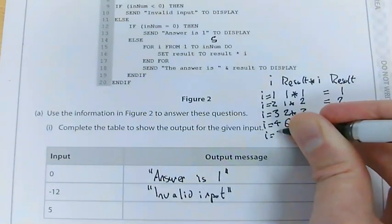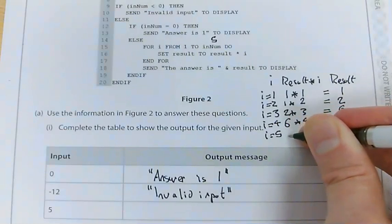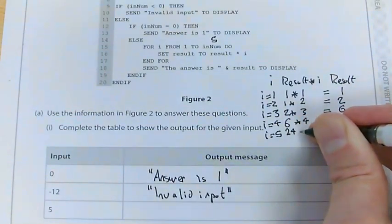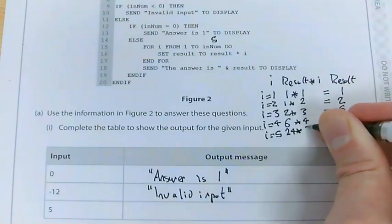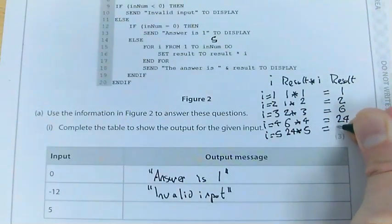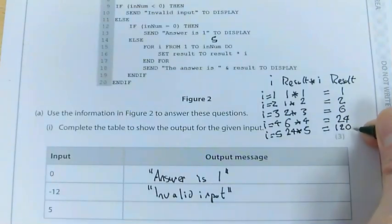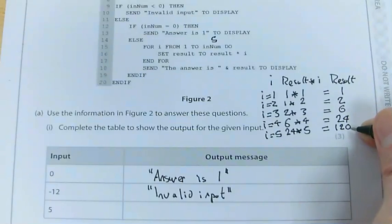Now, i equals 5. Next line. My final line. Result now is 24. So now, it's 24 times 5. Which is, you have to do this without a calculator, 120. So you're not allowed a calculator in the exam. You need to do this in your head.